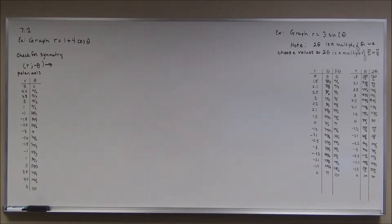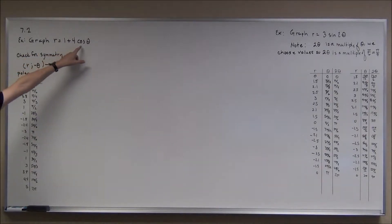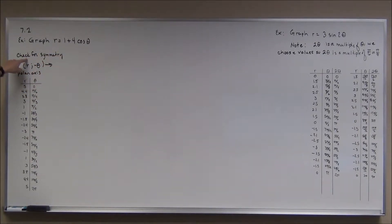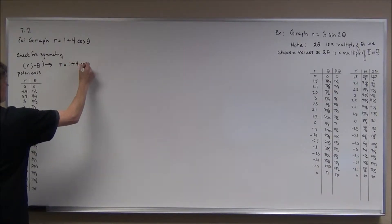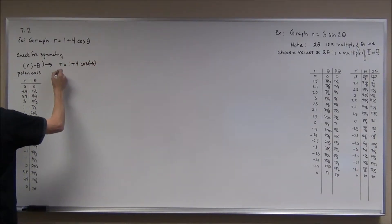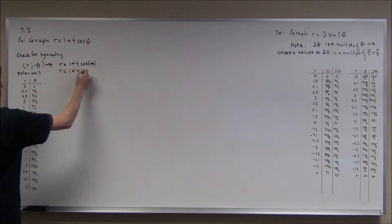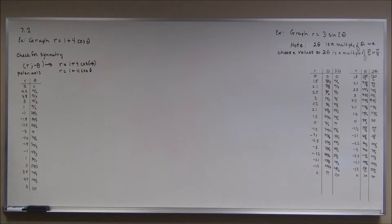We're back in section 7.2 graphing polar equations, picking up from the previous video. We're also going to use symmetry to help with our graph. For r = 1 + 4cos(θ), I should check for symmetry. Since cosine is an even function, substituting −θ gives cosine(−θ) = cosine(θ), back to the original, so we have symmetry with respect to the polar axis.